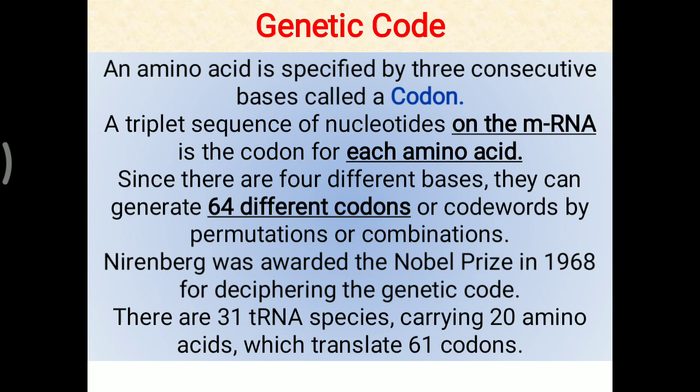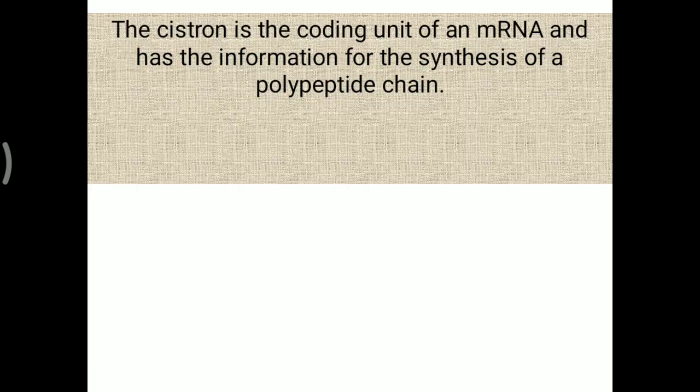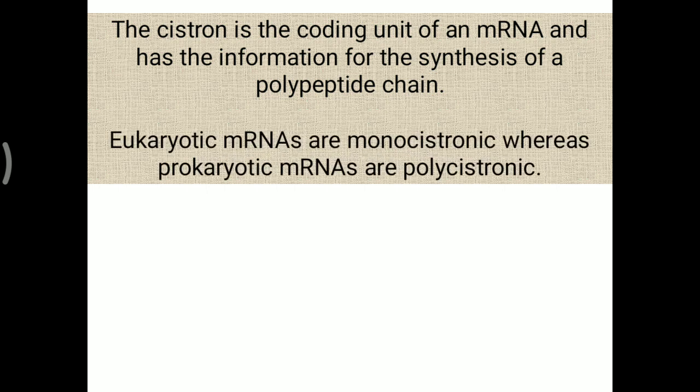The cistron is the coding unit of an mRNA and has the information for the synthesis of a polypeptide chain. Eukaryotic mRNAs are monocistronic, whereas prokaryotic mRNAs are polycistronic in nature.